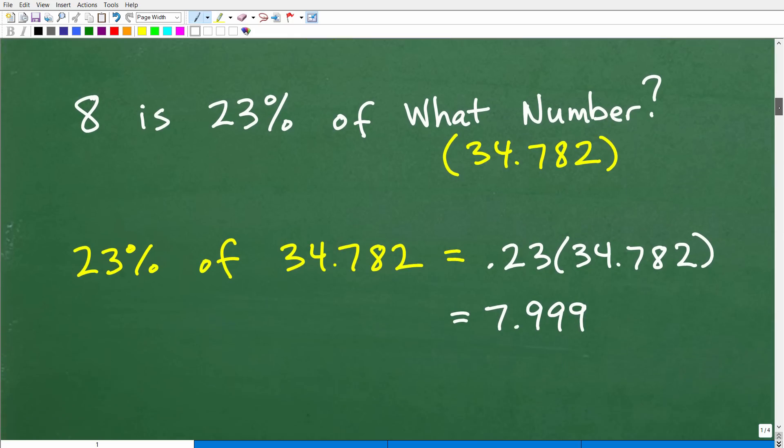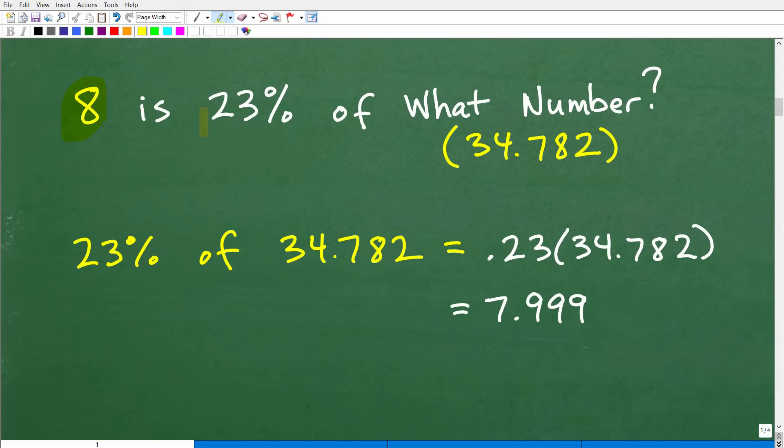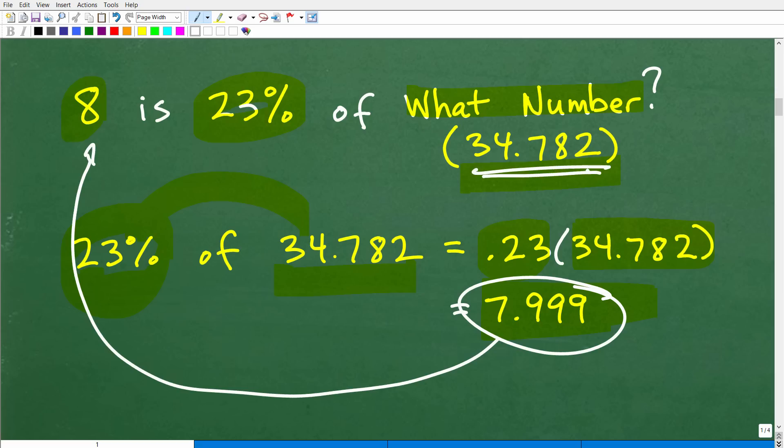So let's go back to our original problem. 8 is 23% of what number? Well, now we know that number. It's 34.782. Now that's an estimate because we did round off a few decimal places. But let's check this. If I take 23% of this number now, 34.782, what's that going to be equal to? Well, 23% of this number is going to be equal to 0.23. Remember, we take that 23% and turn that into a decimal. So that's 0.23, and we'll multiply it by that number, 34.782. And when we plug this into our calculator, we get 7.9999, and of course, we get some other decimals as well. But you can see we're pretty much right there at 8.